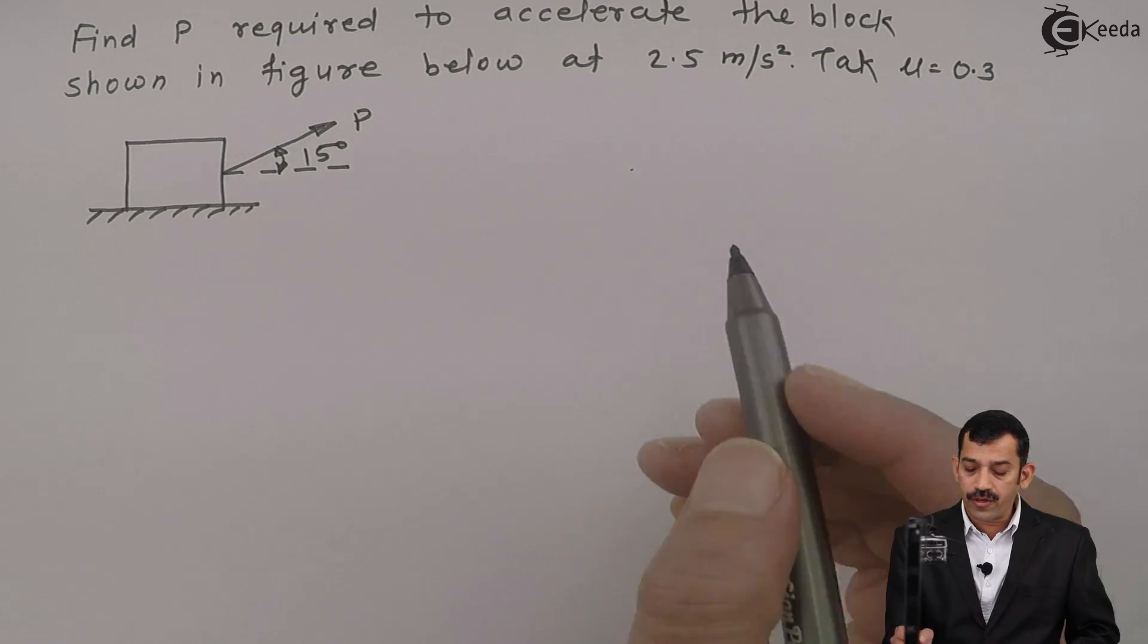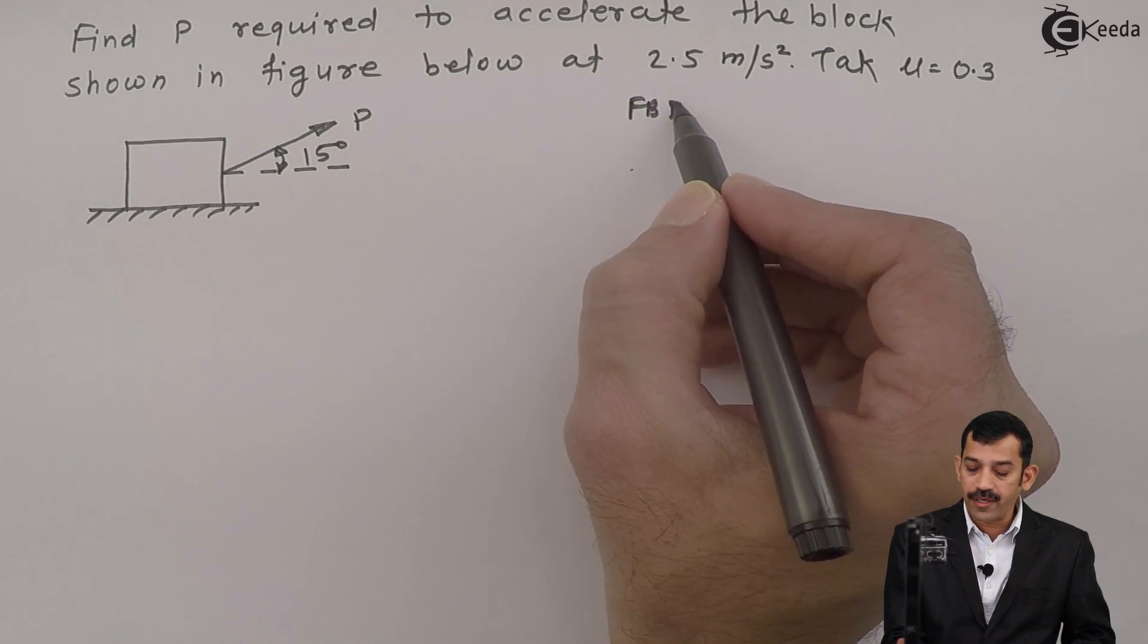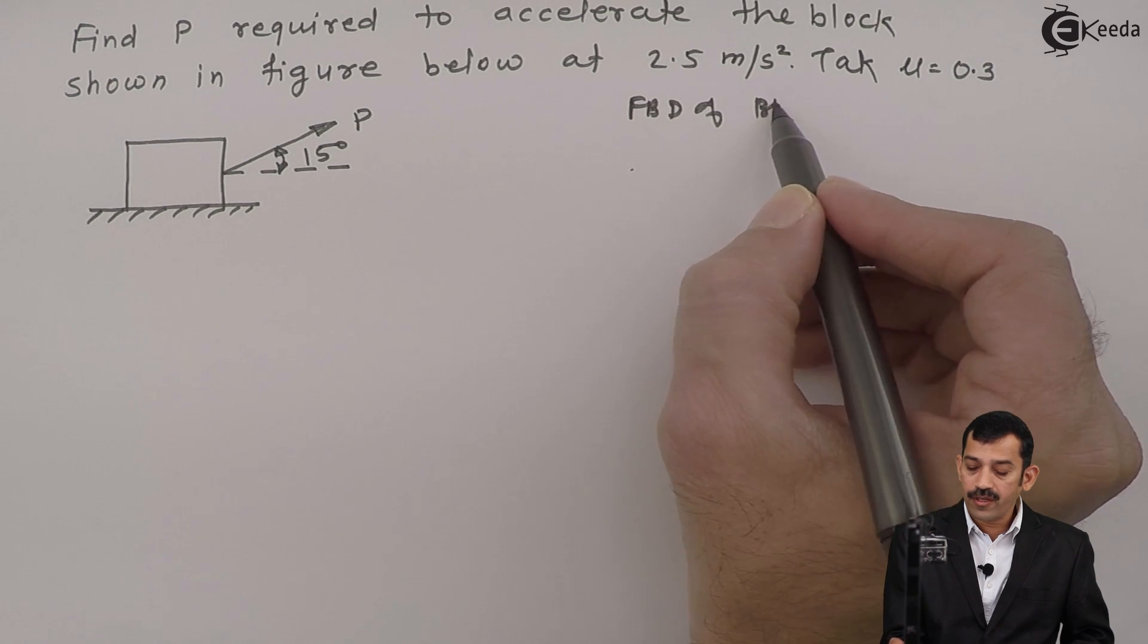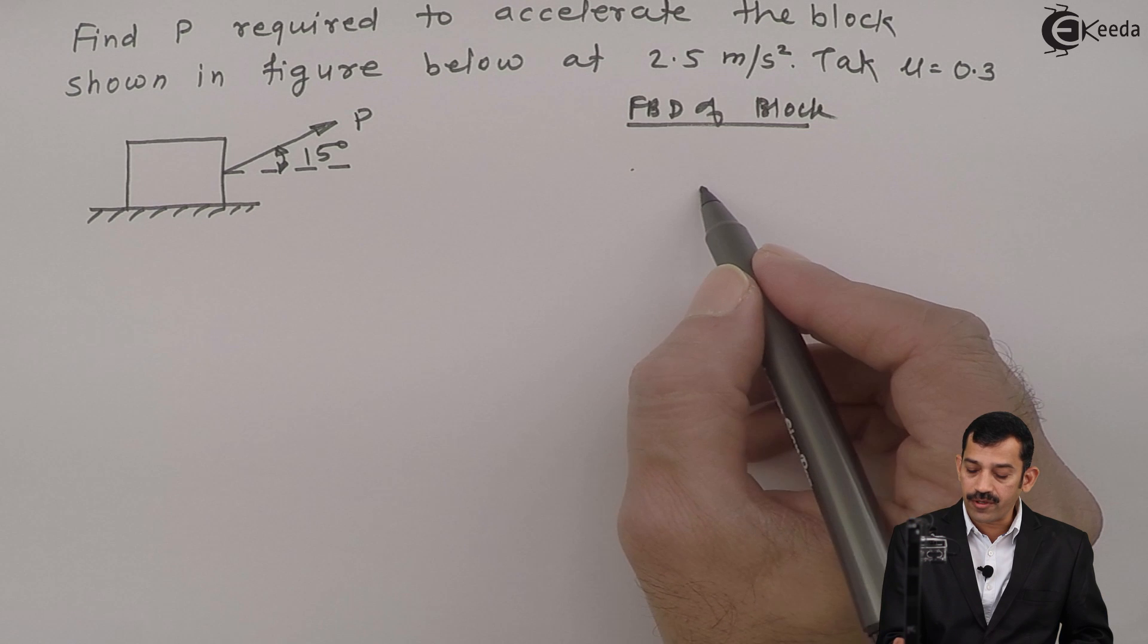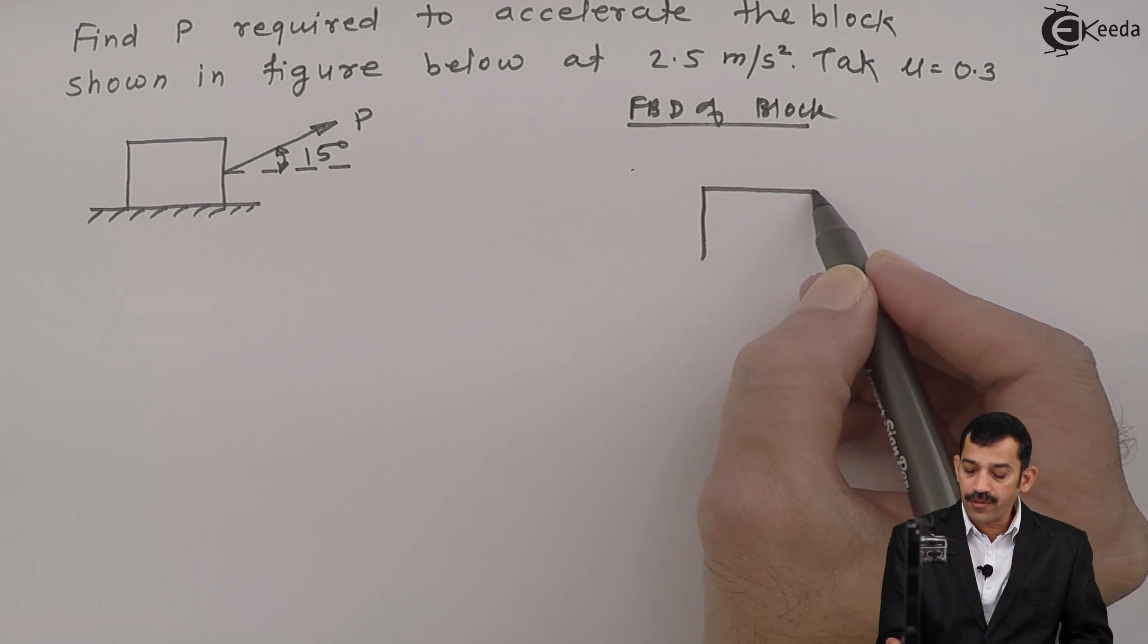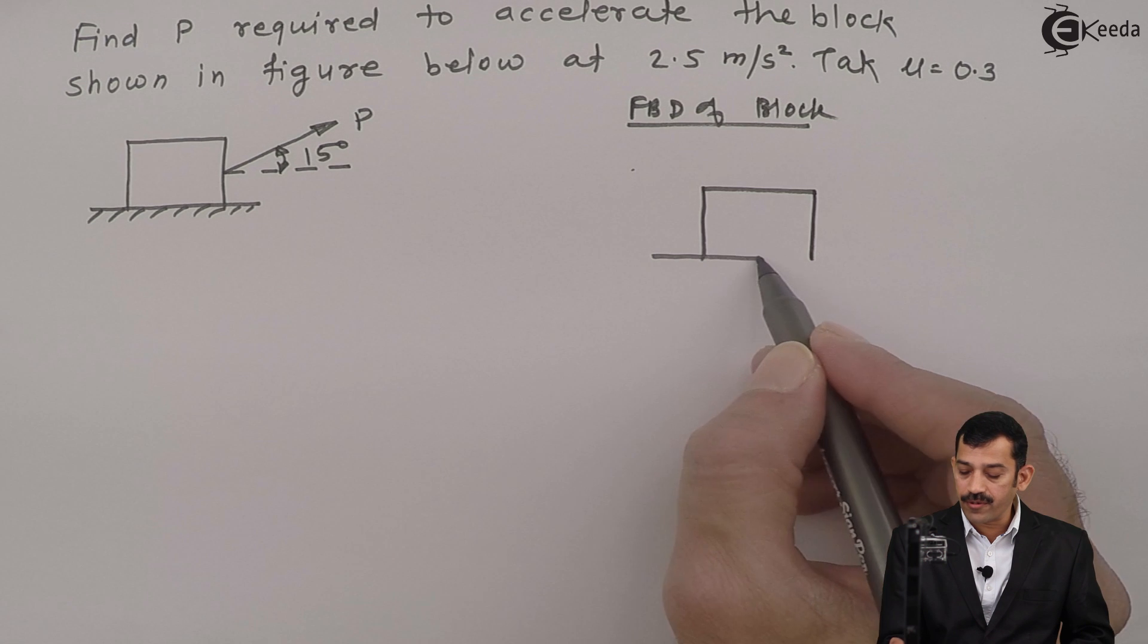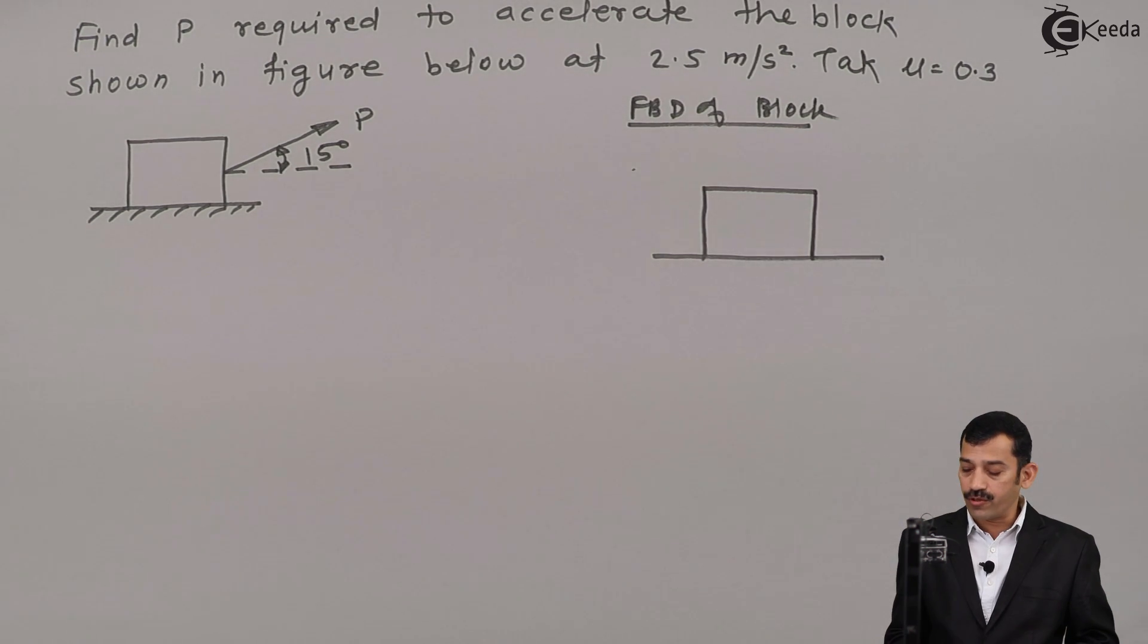First step: we will draw the free body diagram of this block. In D'Alembert's principle, the free body diagram is very important. Once we represent the free body diagram and apply D'Alembert's principle, in one step we will get the solution.